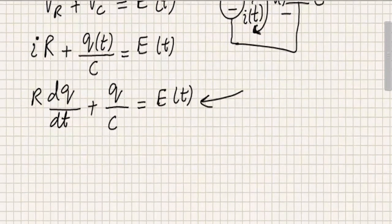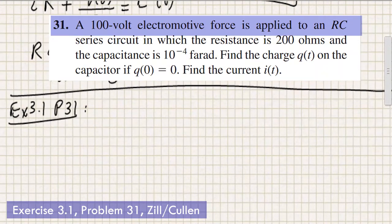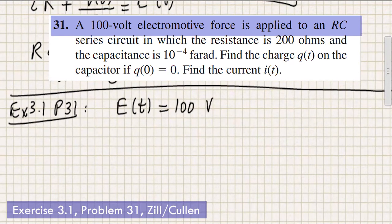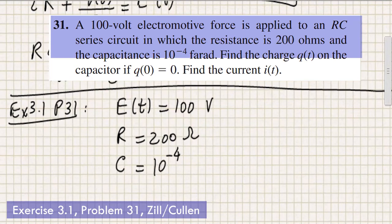So let's go and do an example. So this is exercise 3.1, problem number 31. The problem states that a 100 volt electromotive force, so I'm going to write E of T equal to 100, the units are volts, is applied to a series RC circuit, to an RC circuit, which is a series circuit,